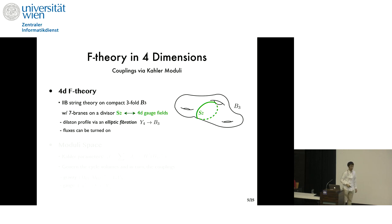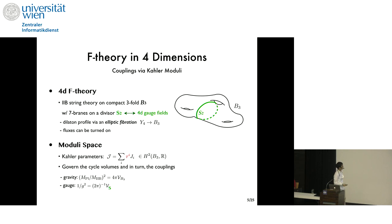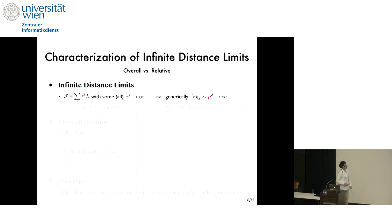But in our Keller story, we won't care much about this fibration structure because we will be mostly concerning the Keller geometries of the internal space. Also, we can turn on gauge fluxes, but this won't affect the story either. Now, moduli space in scrutiny will be the Keller parameters, the tau i's here appearing in the Keller form expansion on B3. They govern the cycle volumes and, in turn, the couplings of the EFTs. In particular, note that the gauge coupling goes to zero if you extend the gauge divisor S. Now, we'd like to classify the asymptotic physics, and to this end, we will first classify the geometries at infinite distance in which one or more of these tau i parameters are taken to infinity.